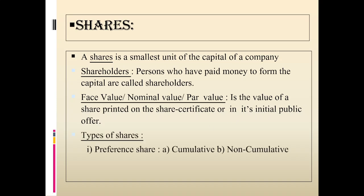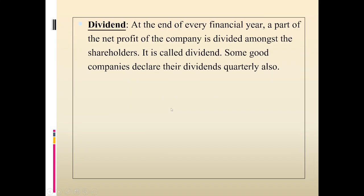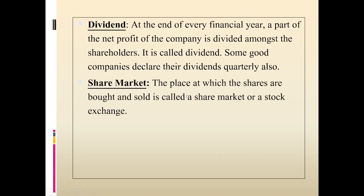Types of shares: preference shares — cumulative and non-cumulative — and equity shares, also called ordinary shares or common shares. Now, dividend: at the end of every financial year, a part of the net profit of a company is divided among the shareholders, and we call it dividend.